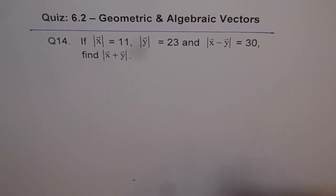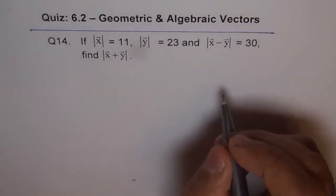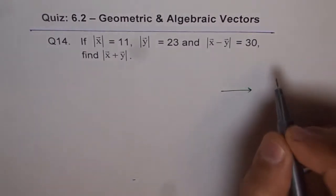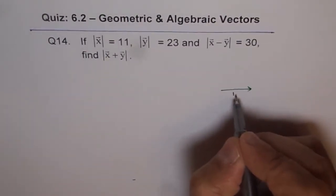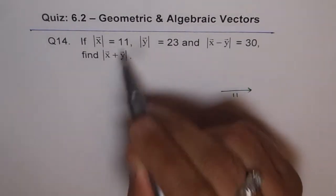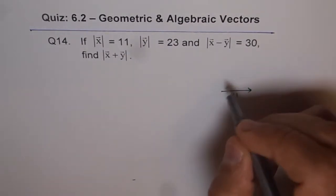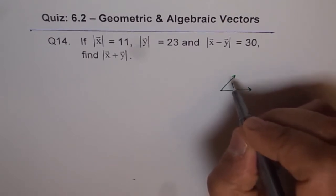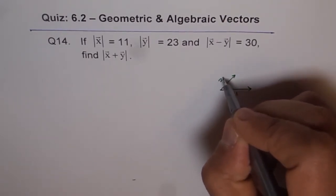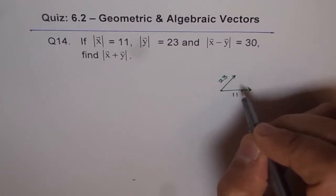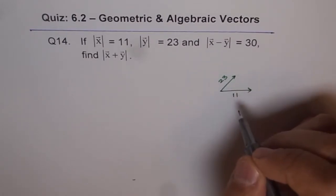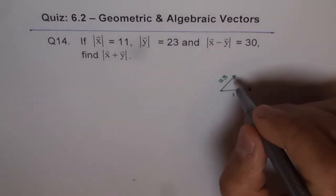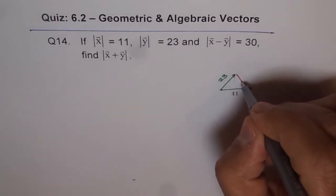So the concept is kind of like this. Let's think that we have a vector x along horizontally like this. Let's put 11 here — that's the magnitude of x. And let's say y is kind of like this, and y is 23, so this must be longer. Let's put 23 here.